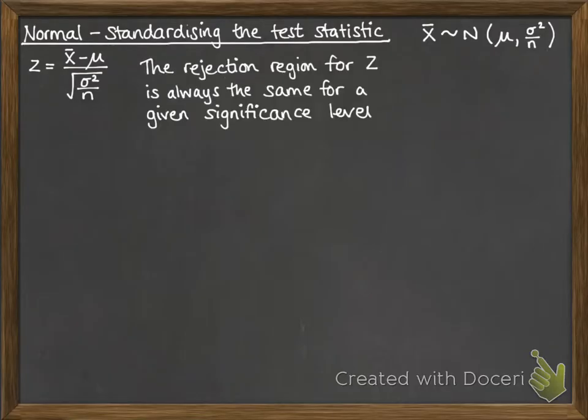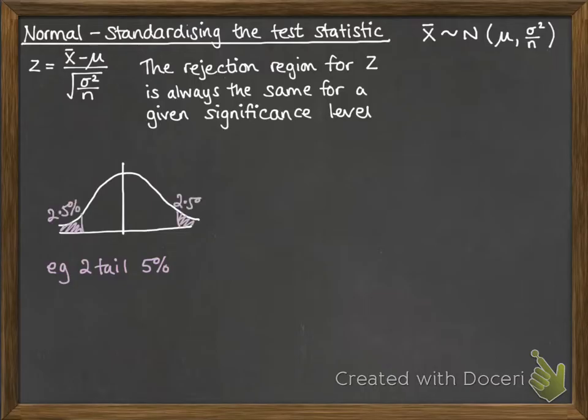Now the rejection region for z is always the same for a given significance level. So if you have your normal distribution and you want to do a two-tail hypothesis test to a 5% significance level, then the z value you would find for that is always the same.